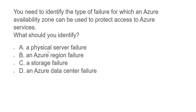The first option says physical server failure. If there is a physical server failure in one data center, Microsoft would do a switchover to different hardware within the same data center. You don't need to switch to another AZ because you can handle that within the same AZ. So this cannot be the answer.